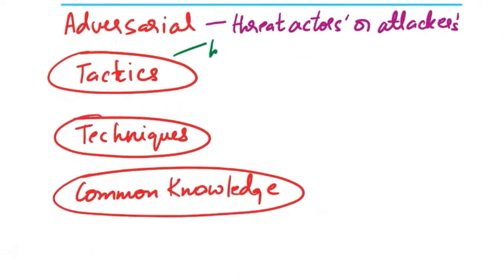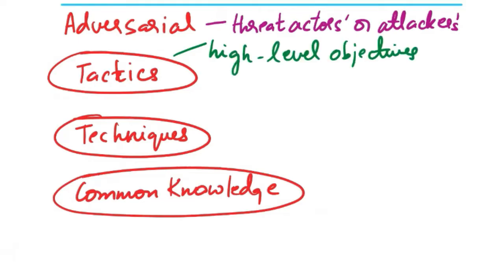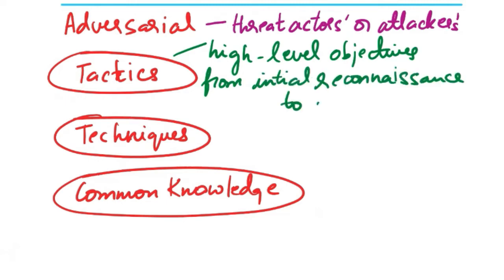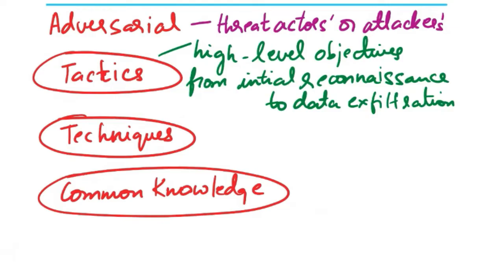Tactics represent the high-level objectives that adversaries aim to achieve during a cyber attack. These objectives cover various stages of the attack life cycle from initial reconnaissance to data exfiltration. Examples of tactics include initial access, execution, persistence, privilege escalation, defense evasion and impact. We will talk about these tactics in depth later.